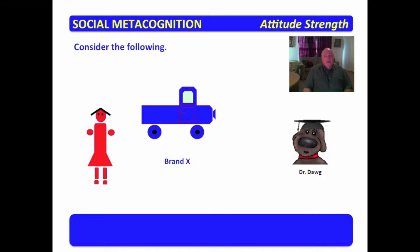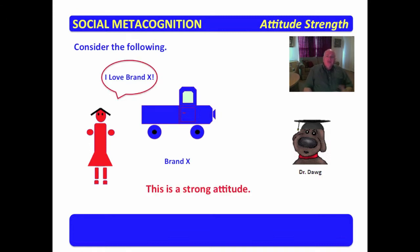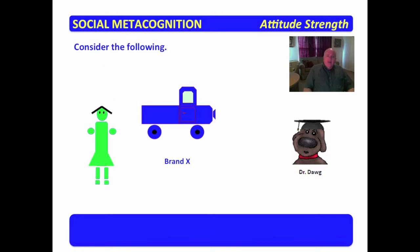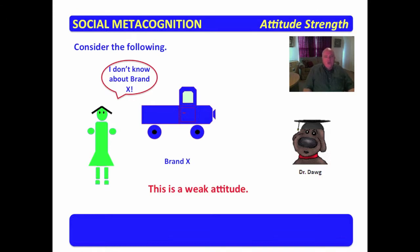Here we have a young lady and a pickup known as brand X, and she loves brand X pickups — this is a strong attitude. Here we have another young lady and a brand X pickup, and she doesn't know about brand X pickups — this is a weak attitude. The first one had a strong attitude about the pickup; the second one doesn't.